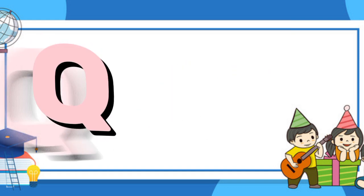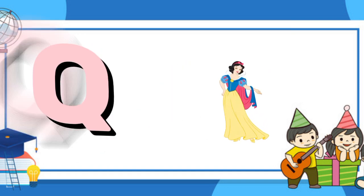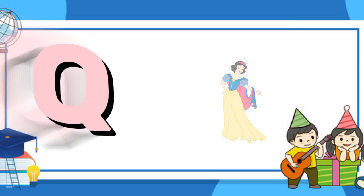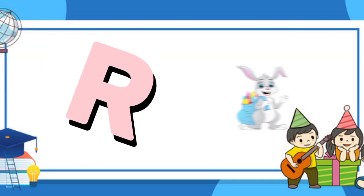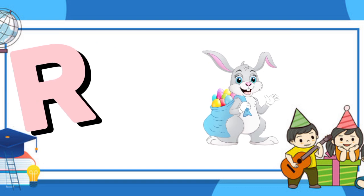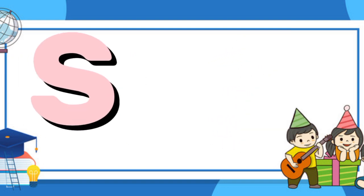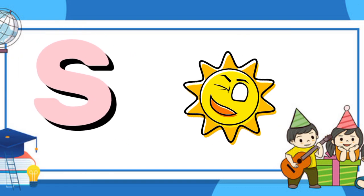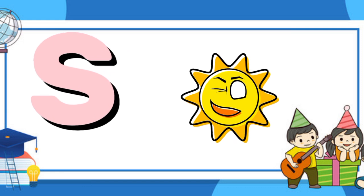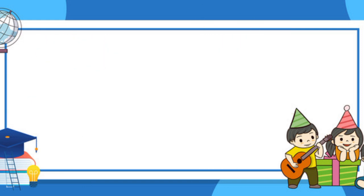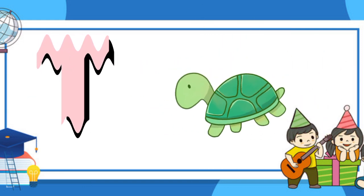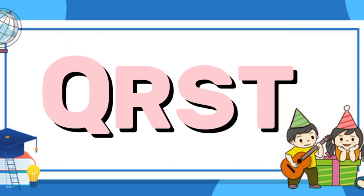Q is for queen, qu-qu-queen. R is for rabbit, r-r-rabbit. S is for sun, s-s-sun. T is for toad, t-t-toad.